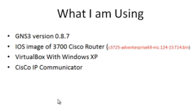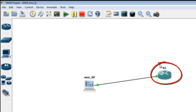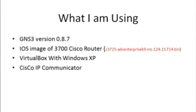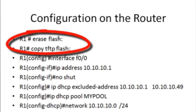Right now I'm going to go to GNS3 and you can see I already set up the topology. This is going to be my virtual machine, my XP machine. And this is going to be the voice router, the 3700 router. It's going to be a router and it's also going to be a call manager. Let's go back to the presentation — I'm going to show you what you need to do for the configuration. There are some tips I want you to follow in order to have a working Voice over IP network in GNS3.